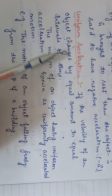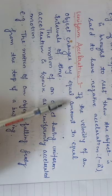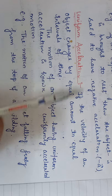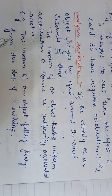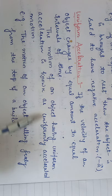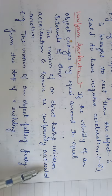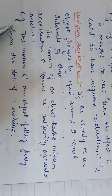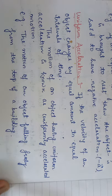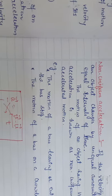Uniform acceleration: if the velocity of an object changes by equal amounts in equal intervals of time, such acceleration is known as uniform acceleration. The motion of an object having uniform acceleration is known as uniformly accelerated motion. For example, the motion of an object falling freely from the top of a building — such acceleration is known as uniform acceleration.